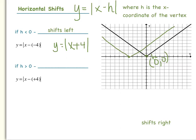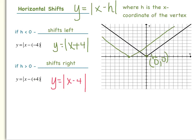Now, if your h value is greater than 0, the whole graph shifts to the right. For example, y equals the absolute value of x minus 4. This looks like you're subtracting 4, and because the h value is positive, we move the graph to the right 4 units. Counting 4 units to the right gives us our new vertex and new graph.